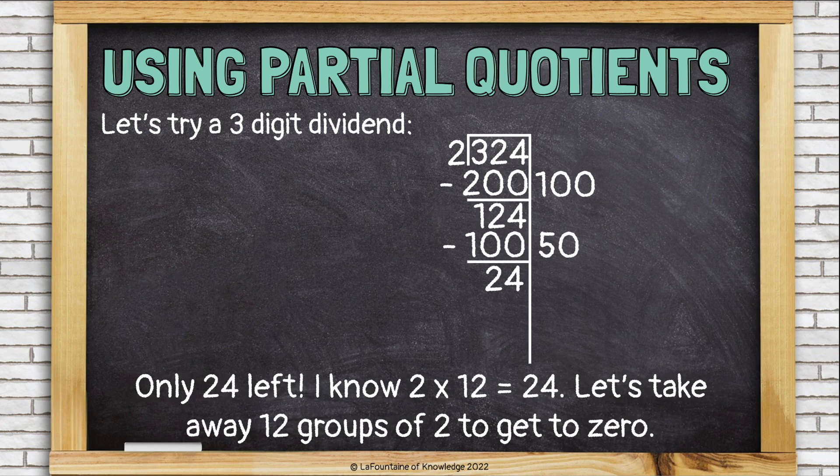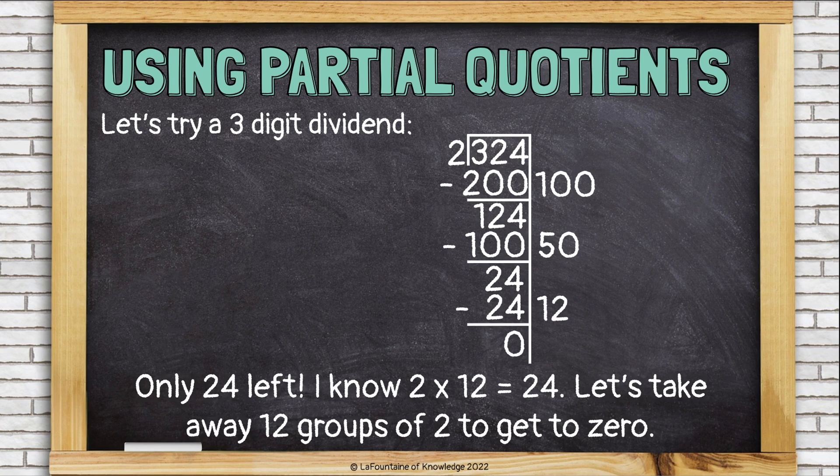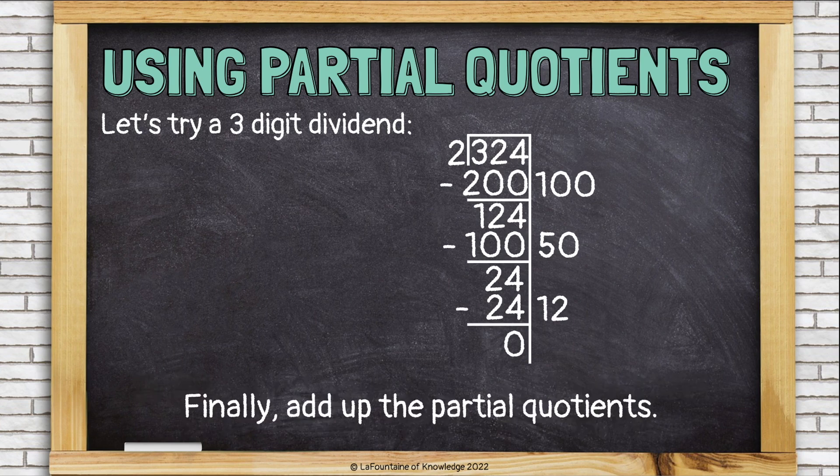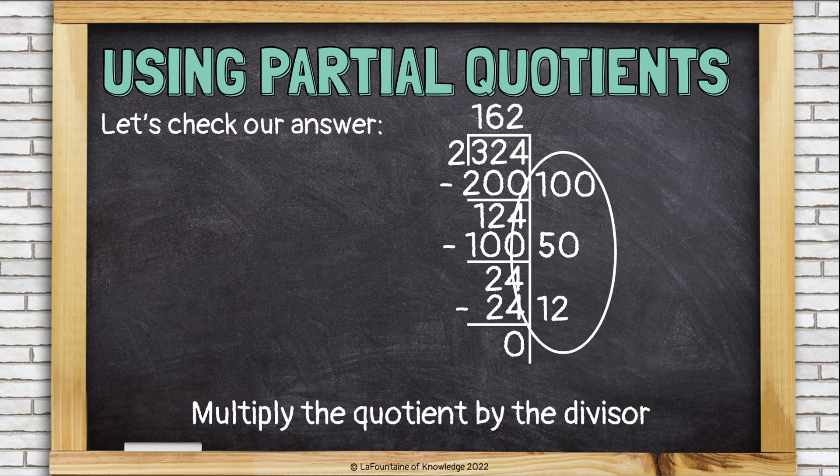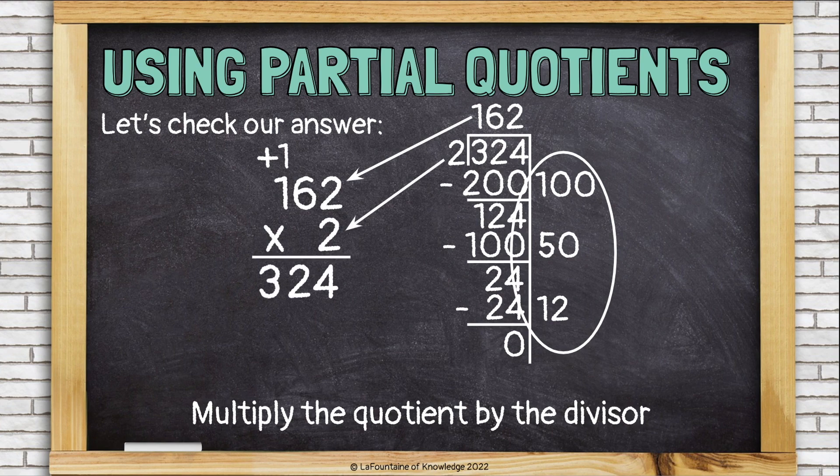I know 2 times 12 is 24. Let's take away 12 groups of 2 to get all the way down to 0. And then we'll add up our partial quotients, and our answer is 162. Remember, you can always use multiplication to check your answer by multiplying the answer by the divisor, and you should hopefully get your dividend if you're correct, and we are.